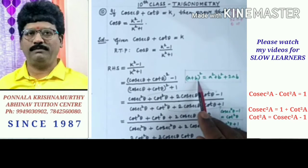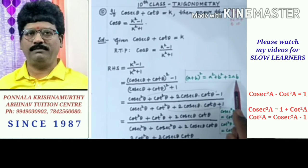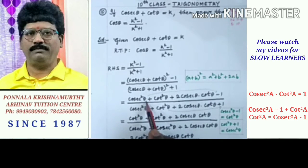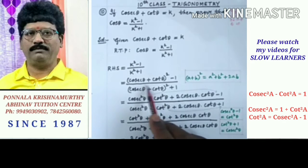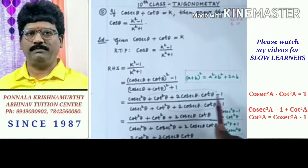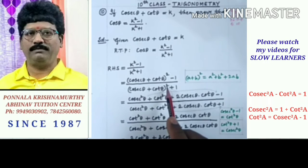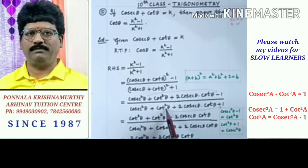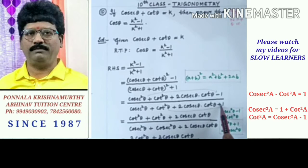This is in the form of (a + b)² which equals a² + b² + 2ab. Expanding, the numerator becomes cosec²theta plus cot²theta plus 2 cosec theta cot theta minus 1. Similarly in the denominator, cosec theta plus cot theta whole squared becomes cosec²theta plus cot²theta plus 2 cosec theta cot theta plus 1.